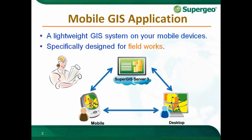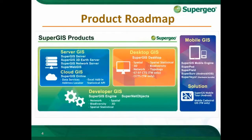First, we're going to talk about the Mobile GIS application. It is a lightweight GIS system on your mobile device, specifically designed for fieldwork — you take your mobile device to the field to do a survey, then bring the data back to the desktop environment or server. In SuperG's product line, we have server, desktop, mobile GIS, and advanced developer GIS for advanced clients. Today we're talking about the mobile GIS called SuperServe, available for Android and iOS.